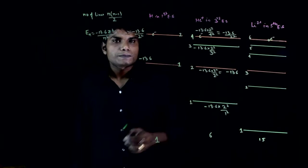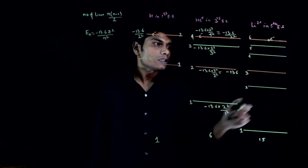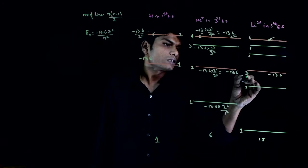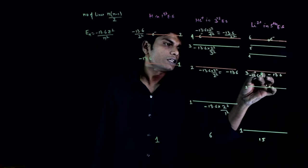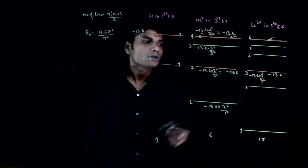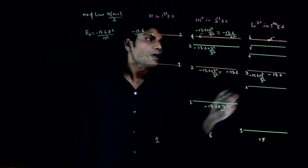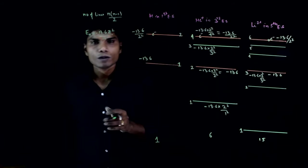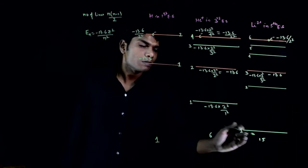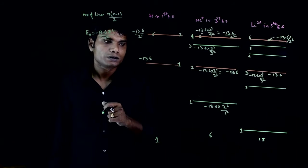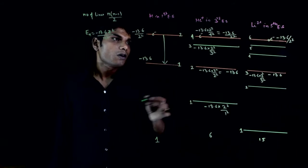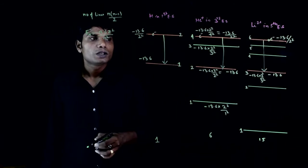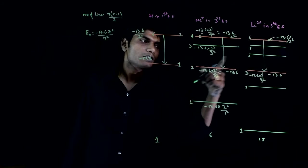Similarly for lithium 2 plus (Z=3): at n=3, the energy is −13.6×9/9 = −13.6 eV, which is the same as hydrogen's n=1 level; and at n=6, the energy gives −13.6/2², which is also the same as hydrogen's n=2 level. So the energy levels of hydrogen, helium plus, and lithium 2 plus overlap — the same wavelength lines appear in all three species.